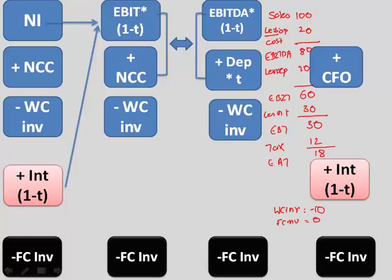Sales 100 minus operating expenditure, all cash 20, EBITDA 80 minus depreciation 20, EBIT 60, less interest 30, EBT 30, tax 12 and EAT 18. Let's plot the numbers in the first formula. Net income, which is 18. Non-cash charges, what would be those? Depreciation, which is 20 minus working capital investment.